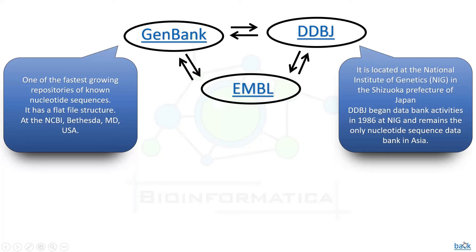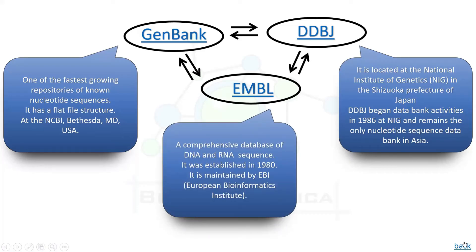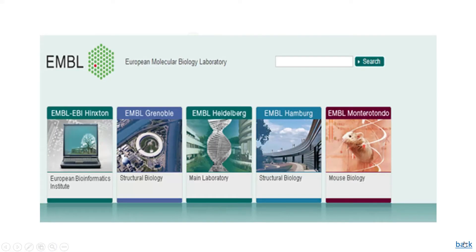The third nucleotide sequence database is EMBL, that is European Molecular Biology Laboratories. It is a comprehensive database of DNA and RNA sequences, established in 1980, and maintained by EBI — the European Bioinformatics Institute. The main activity of the group is the development, maintenance, and distribution of a comprehensive nucleotide sequence database. A typical entry in EMBL contains a sequence, a brief description for cataloguing purposes, the taxonomic description of the source organism, bibliographic information, and a feature table containing the location of coding regions and other biologically significant sites.